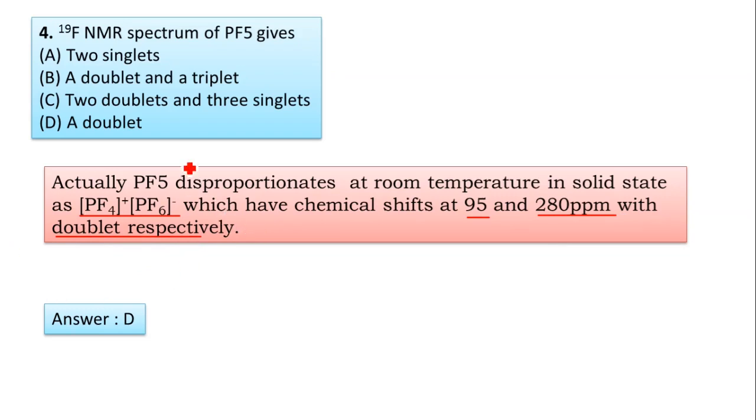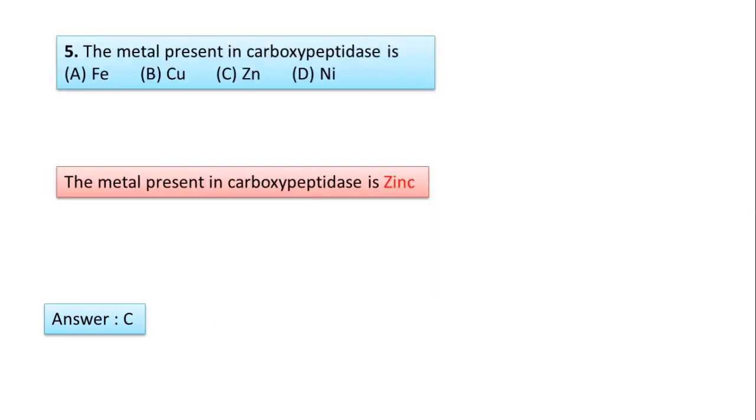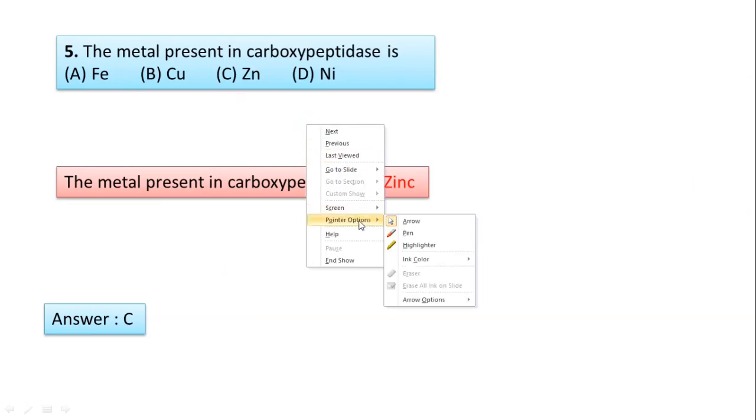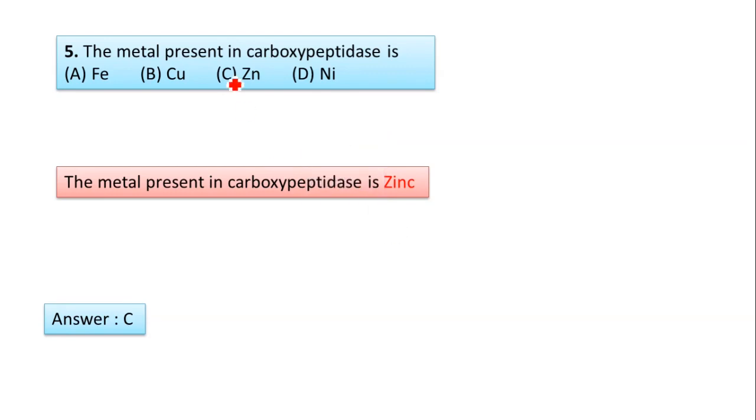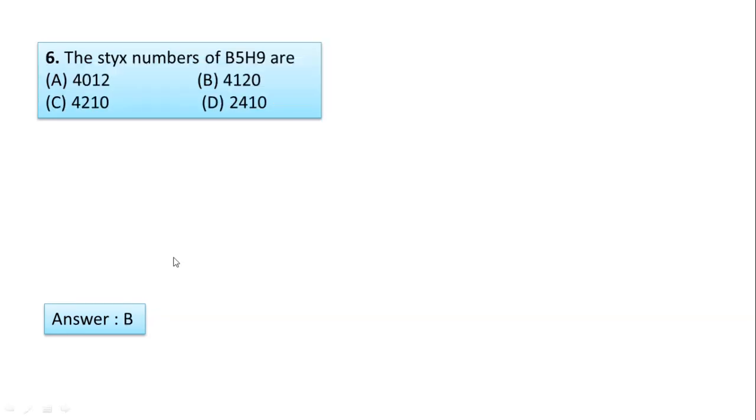Question number 5: The metal present in carboxypeptidase is zinc, so answer C.